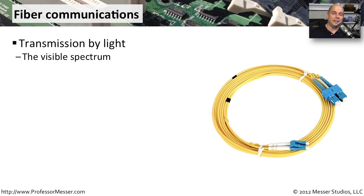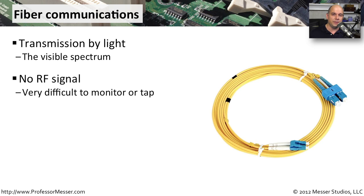A cabling type that's common to see behind the scenes is one that is fiber-based. This fiber uses light to communicate between devices, which is very different than copper cables that send electrical signals. With light, we're able to simply send photons from one device to the other. Because of this, there's no electrical signal, no RF, no radio frequency going between those two connections. So in very secure environments, this is a perfect medium to use because it's difficult to tap into that connection.